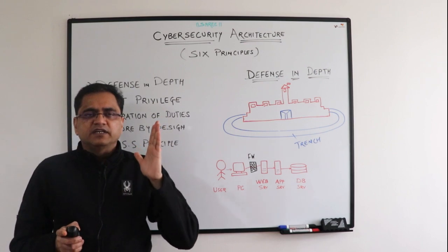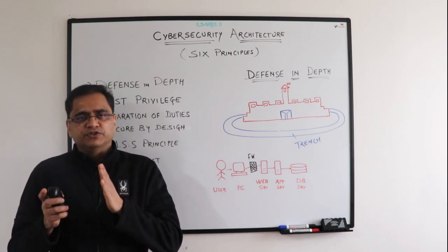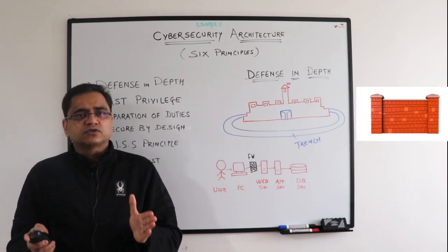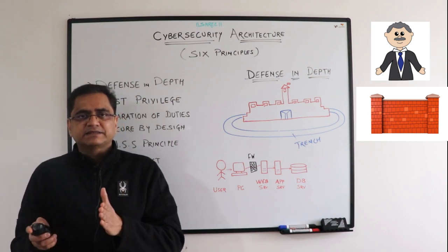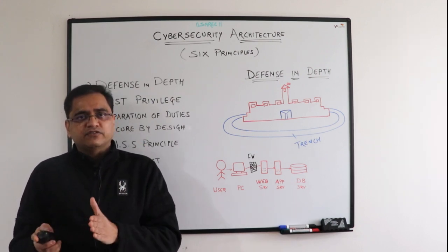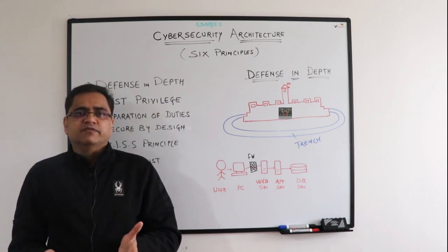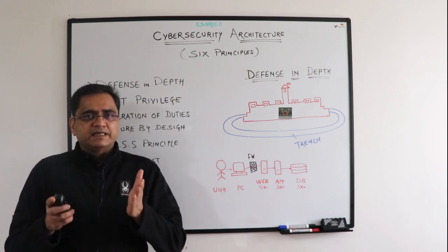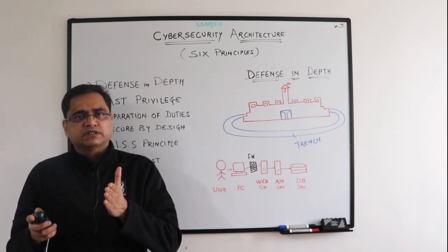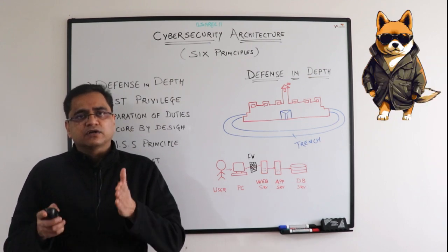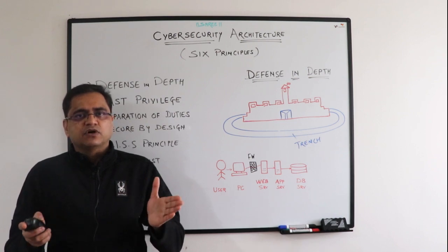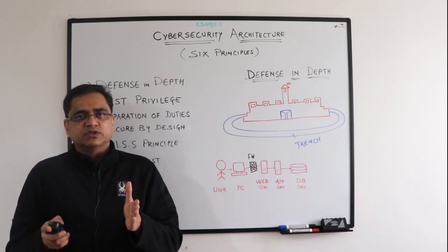Defense in depth is trying to create an obstacle course, a difficulty for the bad guy. Looking at an old security model — the fortress — it was designed with thick tall walls to keep the good guys on the inside and the bad guys on the outside. That worked pretty well until you realize that the good guys sometimes needed to come out, so we needed to put a door on it. The door then became a vulnerability, so we reinforced it, added a trench around the whole thing to make it even harder. Now we have a trench, thick tall walls, and maybe even an angry dog — multiple security mechanisms because defense in depth is all about not relying on any single mechanism to keep the system safe.